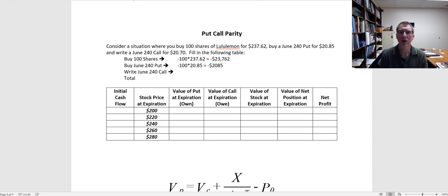And then the last part of this position is I am going to write a contract. Since I'm writing that, that's going to be an inflow, so I'm going to receive that. One contract is for 100 options, and each individual option is $20.70. So that is going to be an inflow of $2,070.